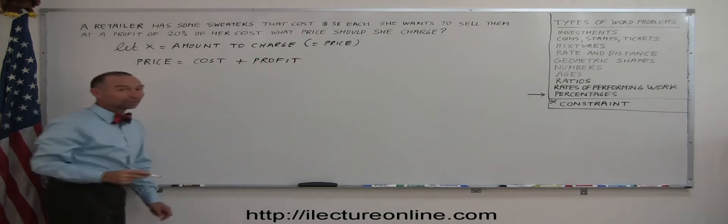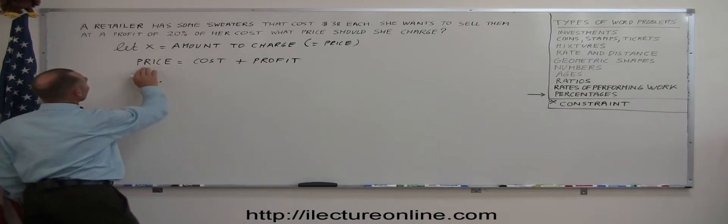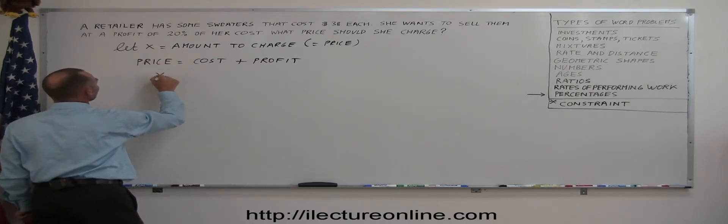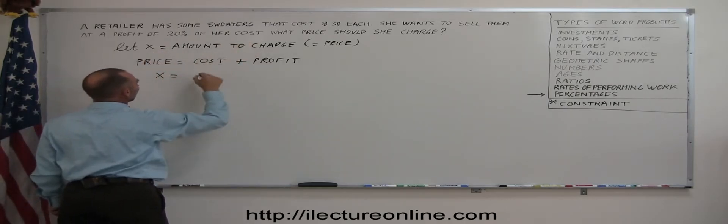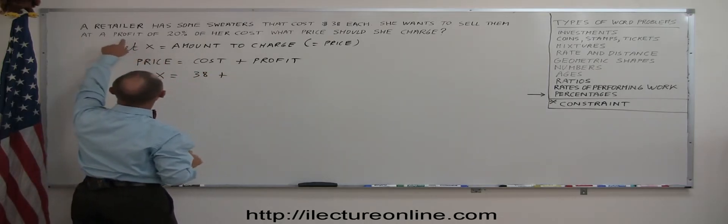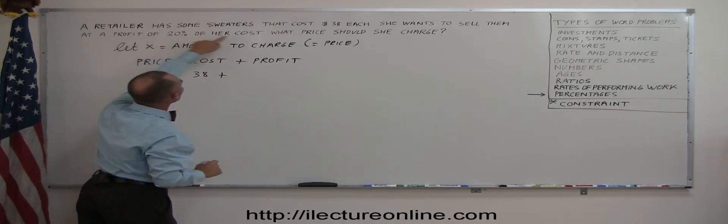And now we just have to write in each one of those what they are. So the price is what we're looking for. We call that X. The cost is the original cost we started with, $38. And the profit was defined by 20% of the cost. So that's 20% of the cost.